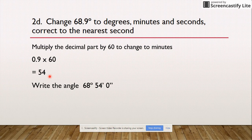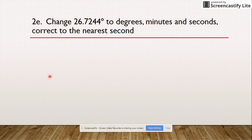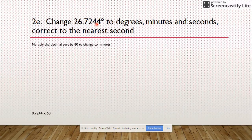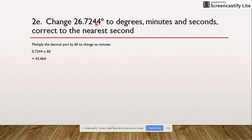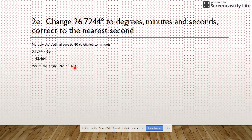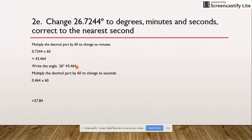Let's do the last one. We know what to do. 26.7244 times that by 60, what do you get? 43.464. So therefore you should have 26 degrees and 43 minutes.